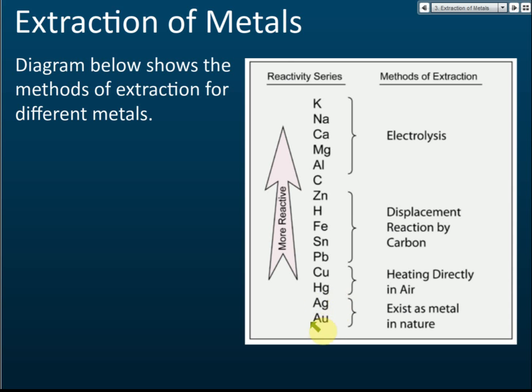For copper and mercury, we can extract them easily by just heating their compounds directly in air. They will automatically be separated from their compounds. So these two are relatively easier compared to the others — you just heat them directly in air.